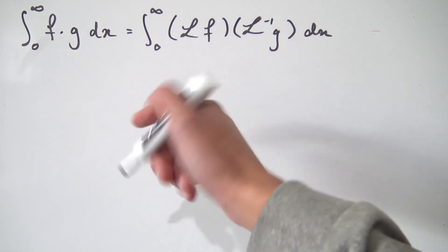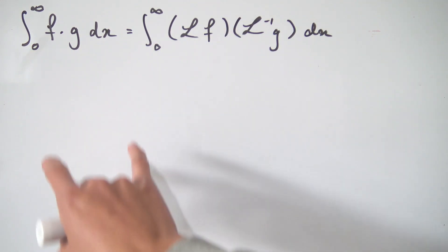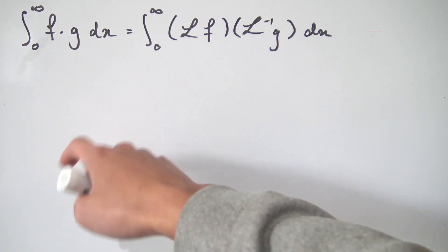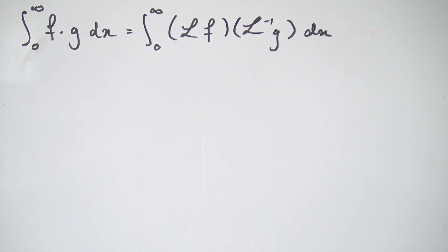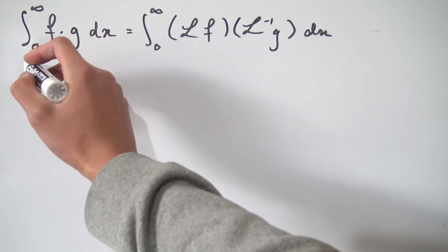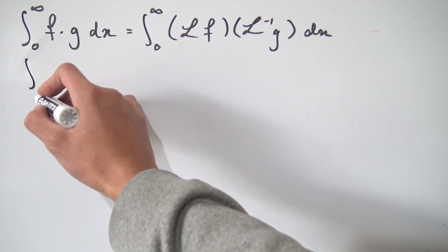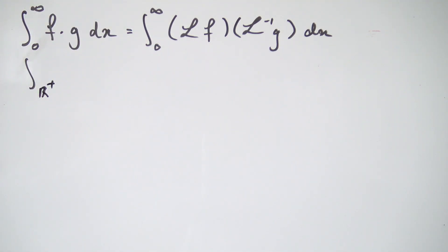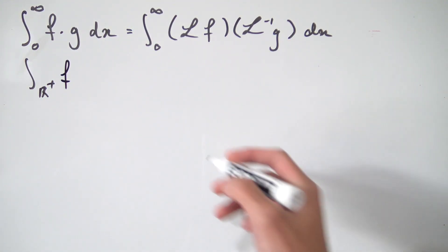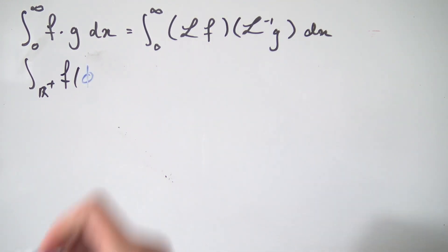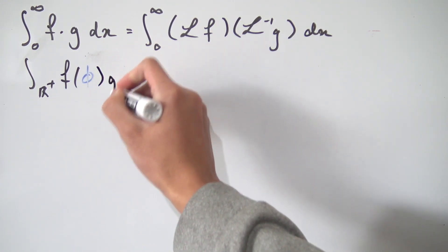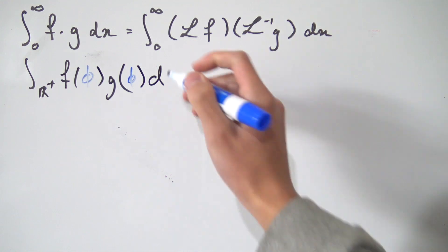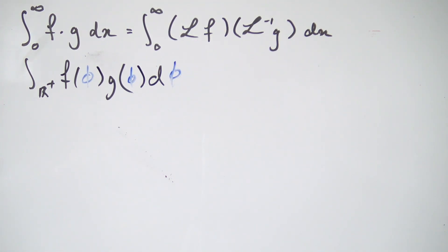I'm going to first rewrite this left-hand side a bit. In order to prove this, we're going to start from the left-hand side and manipulate things to get to the right-hand side. So I'm going to rewrite this as the integral over ℝ⁺ from 0 to infinity of f(φ), where I'm changing the variable to φ, multiplied by g(φ), with a dφ at the end.